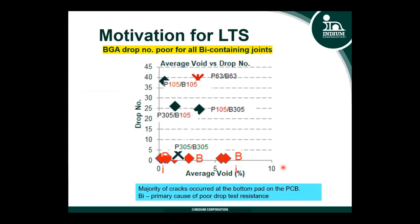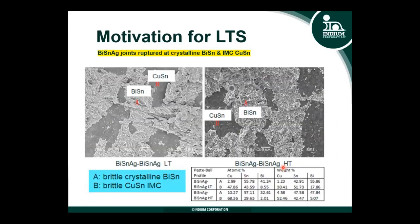Whether it is the bismuth-tin solder in the solder paste or the BGA, as soon as you have one side containing low temperature bismuth-tin solder, you don't survive the shock of the portable device on a drop test. This shows that bismuth-tin solder is low temperature but doesn't quite fit for portable device applications. Looking at the rupture surface — when both solder paste and BGA were made of bismuth-tin solder — it ruptured at the interface with both IMC (copper-tin) and bismuth-tin solder exposed, indicating the bismuth-tin solder is about as brittle as the copper-tin intermetallics.